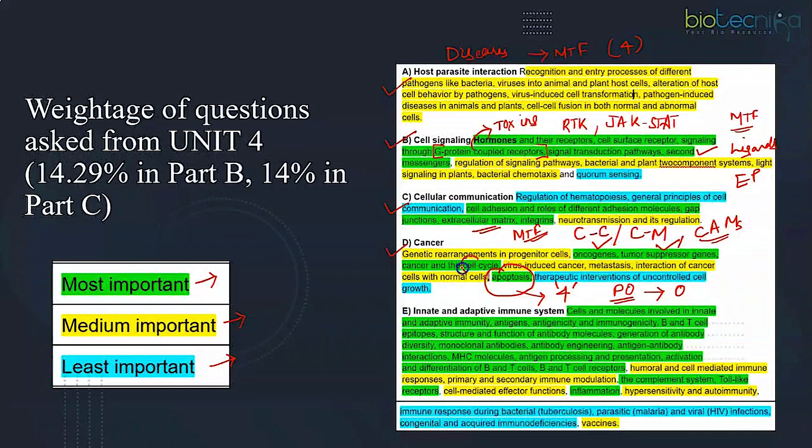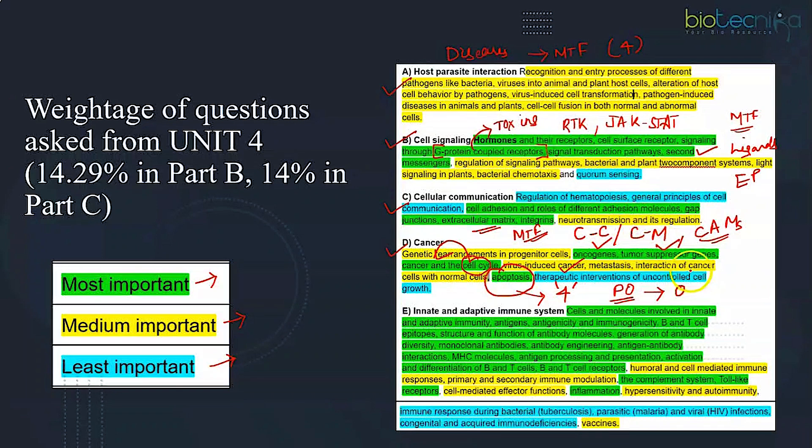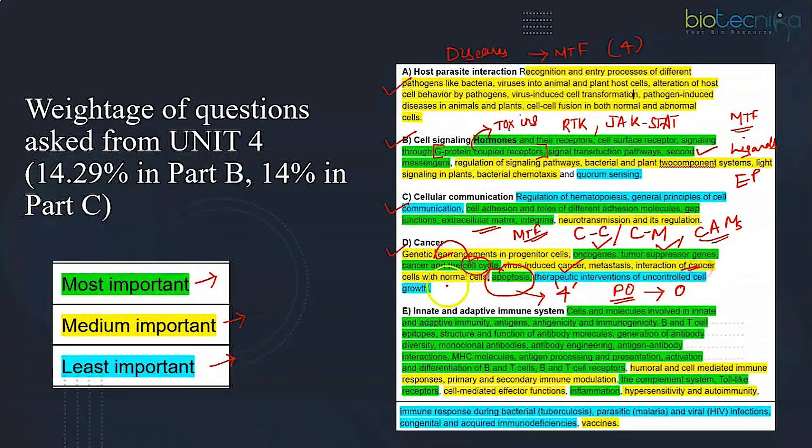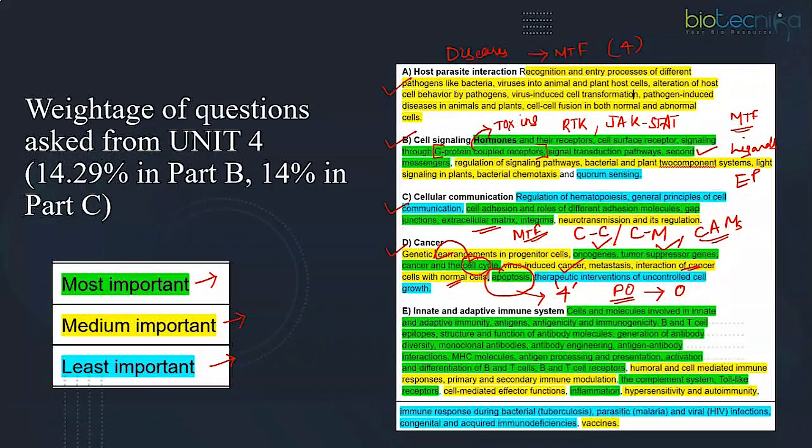Then how cell cycle is related to cancer. Viruses related to cancer, match the following questions can be expected, but that is not so important though you should not skip. Once upon a time, the comparison of cancer cells to normal cells used to be asked frequently, but nowadays the frequency is reduced. But you should not skip this part as well.